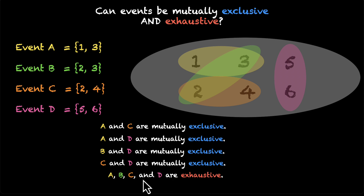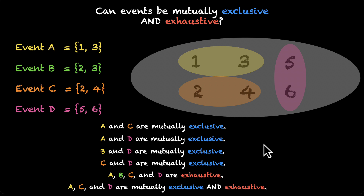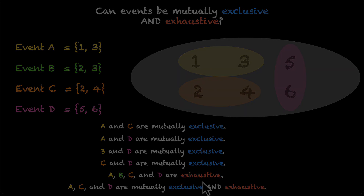But are they mutually exclusive and exhaustive? No, because there is some overlap. Look at event B (green) — it's overlapping with event A (yellow) and event C (orange). If we get rid of the green event, now look at events A, C, and D: they're not overlapping, so they are mutually exclusive. And together they're covering the entire sample space, which means these three events are both mutually exclusive and exhaustive. I hope this example helped you figure out the difference between exclusive and exhaustive events, and also helped you figure out which events are both mutually exclusive and exhaustive.